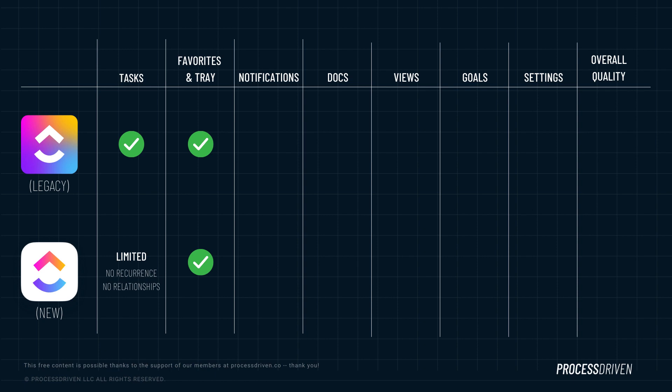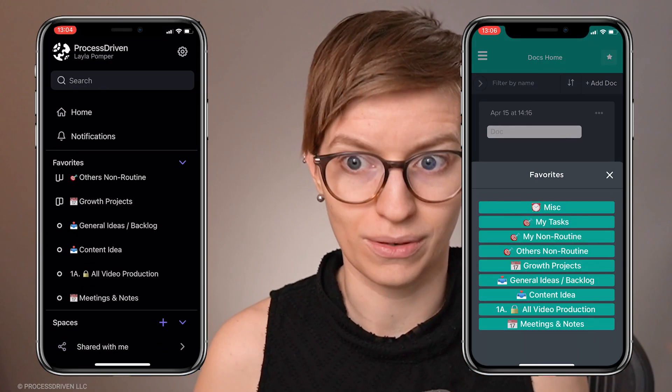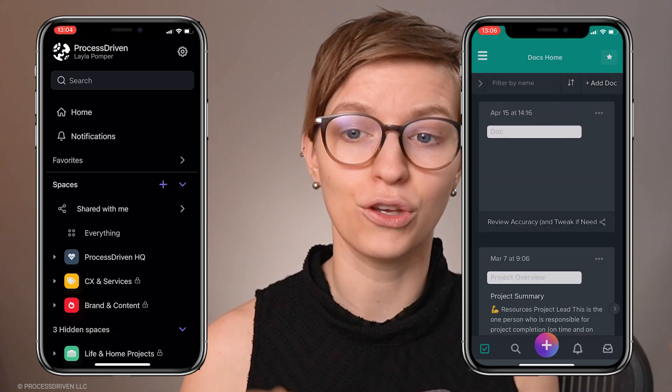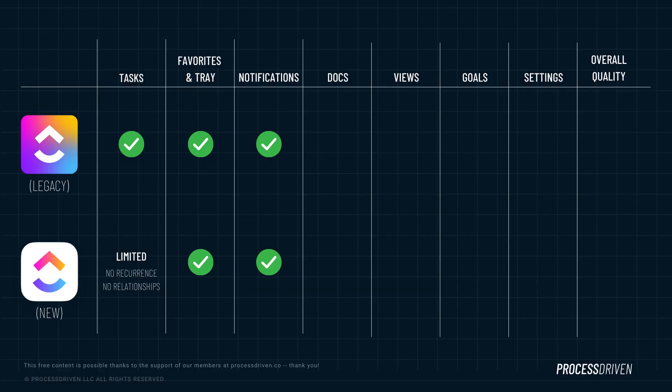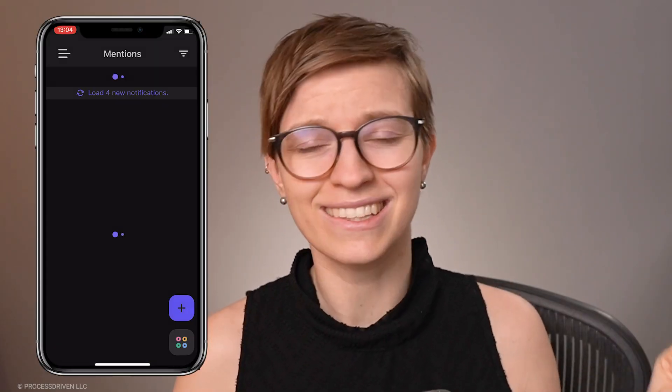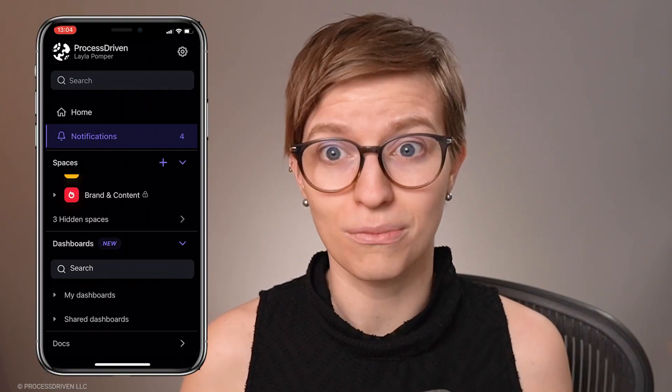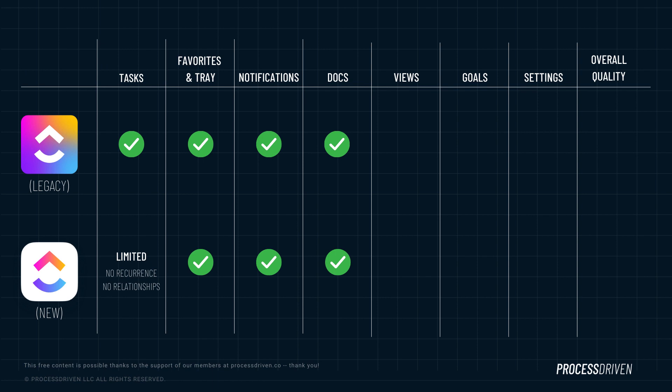Moving on to favorites and tray — these are identical in both apps, which makes it really easy to navigate around. The only exception is if you are favoriting things that do not exist in the mobile app, which I'll tell you about in just a second. After that, we have notifications. Both of these apps allow you to manage your notifications on the go, and the new app is way slicker, faster, and easier to manage. Next up, we have documents — both apps allow you to manage your documents on the go, with the new app again being a much nicer experience.